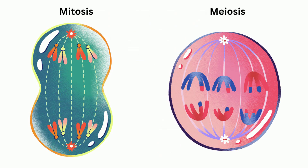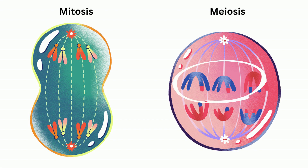During anaphase in mitosis, the chromatids are pulled in opposite directions, but in meiosis, the chromosomes are pulled in opposite directions.